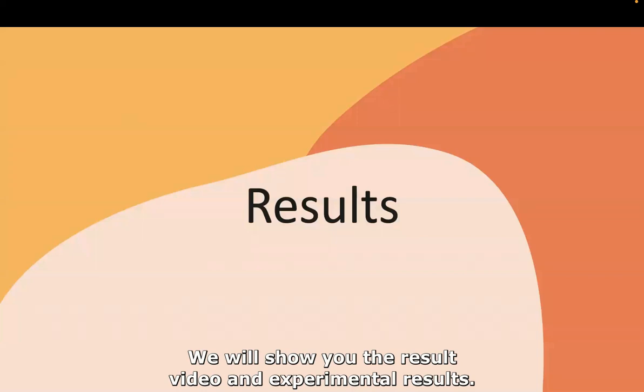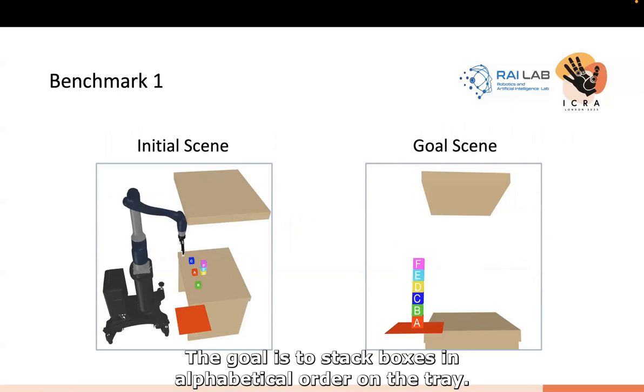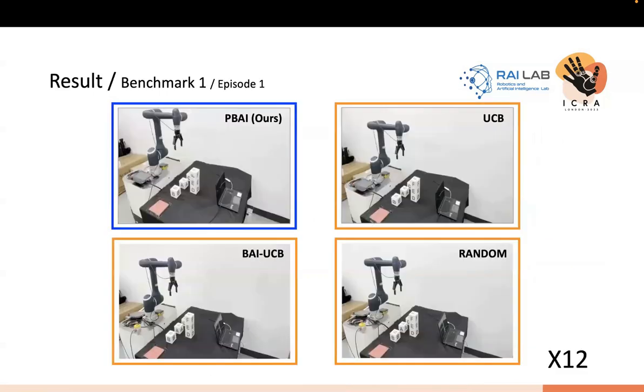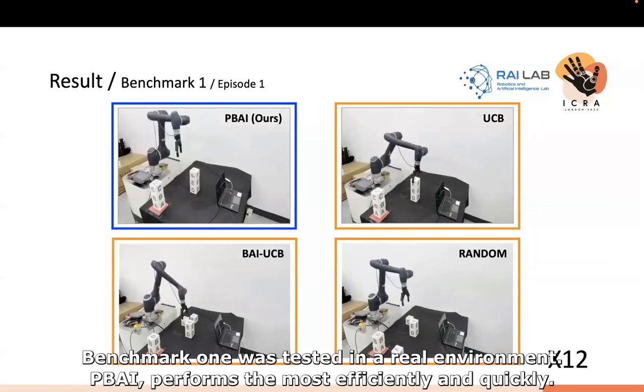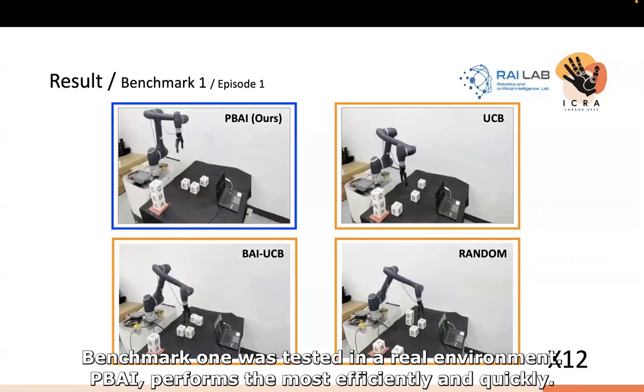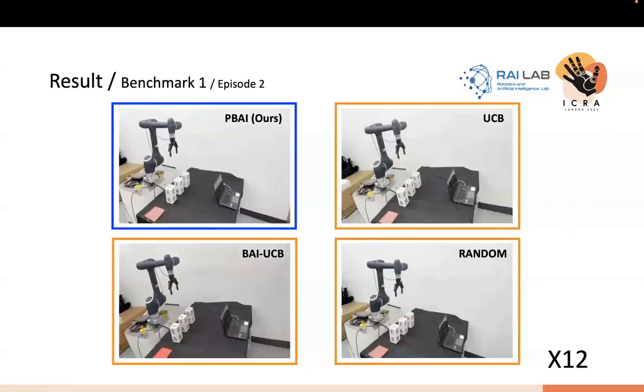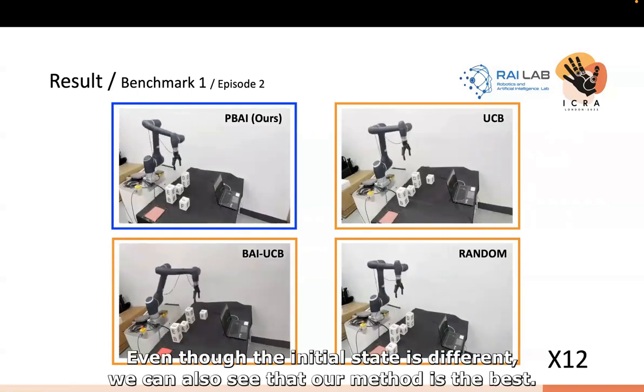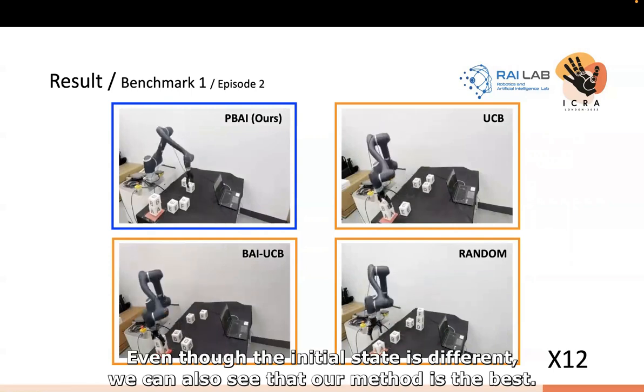We will show you the result video and experimental results. This is benchmark 1. There are six boxes on the table. The goal is to stack boxes in alphabetical order on the tray. Benchmark 1 was tested in a real environment. PBAI performs the most efficiently and quickly. Even though the initial state is different, we can also see that our method is the best.